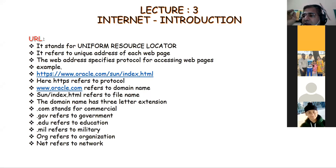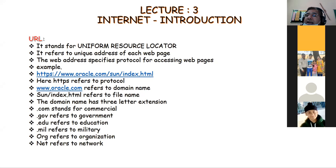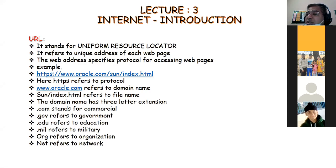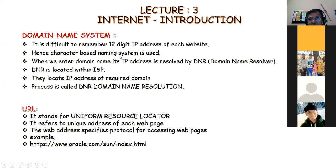Every website is given a name called the domain name - such as www.facebook.com, www.instagram.com, www.cbse.gov.in. It is easy to remember the website name. If I said type the IP address of cbse.gov.in, it would not be feasible for you to remember the IP address of every website. So we are provided with names, and that character-based naming system is called DNS - Domain Name System. It is the character-based naming system by which servers are identified on the network.